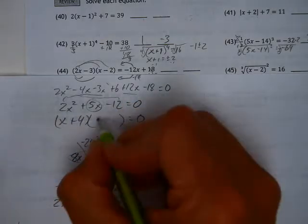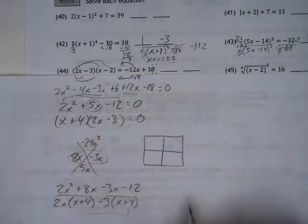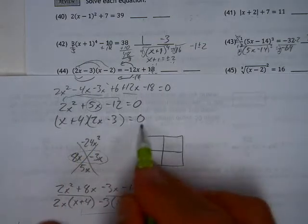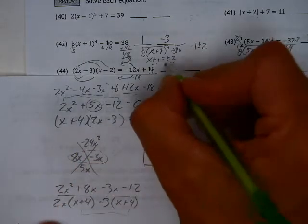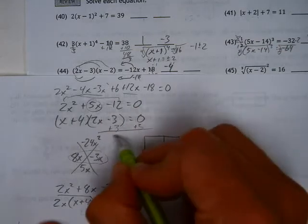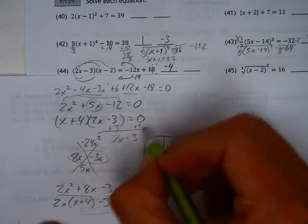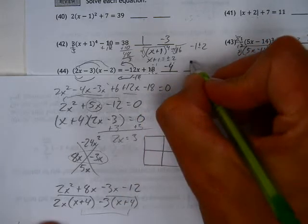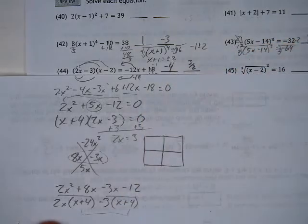And my solutions then, if they're both equal to 0, set that equal to 0. I have a negative 4 as one solution. And I add 3 to both sides. 2x equals 3, divide by 2. 3 over 2 is the solution.